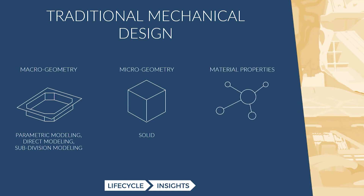The last lever is material properties. To date, you have material selection, which is basically homogenous — you have the same material properties in any spatial direction, and you select one. Of course there have been advancements with composites and things like that. But in general, there hasn't been a whole lot of control with material properties and micro geometry. The big lever that mechanical engineers have been pulling to control their designs has really been macro geometry — controlling and shifting what that outer shape looks like.